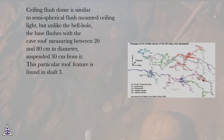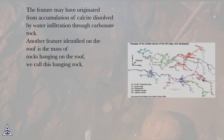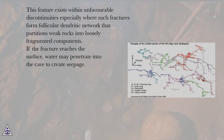Ceiling flush dome is similar to a semi-spherical flush-mounted ceiling light, but unlike the bell hole, the base flushes with the cave roof, measuring between 20 and 80 centimeters in diameter, suspended 30 centimeters from it. This particular roof feature is found in shaft 3 and may have originated from accumulation of calcite dissolved by water infiltration through carbonate rock. Another feature identified on the roof is the mass of rocks hanging on the roof — we call this hanging rock. This feature exists within unfavorable discontinuities, especially where such fractures form a follicular dendritic network that partitions weak rocks into loosely fragmented components.